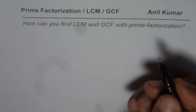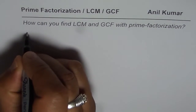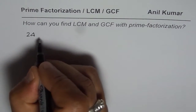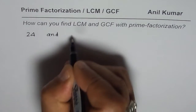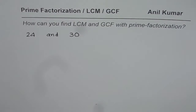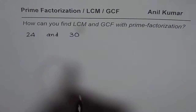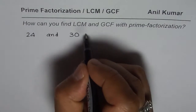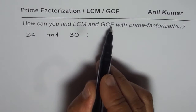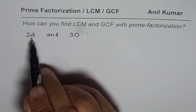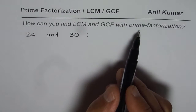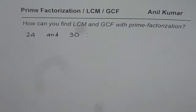So let's take two numbers to start with: 24 and 30. We need to find what is least common multiple and what is the greatest common factor between 24 and 30. The method used will be prime factorization.